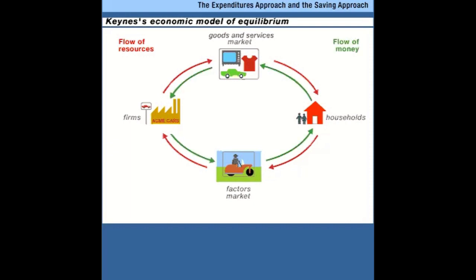If we start with this simplest possible model of the macroeconomy, it must be true that the top half of this flow has exactly the same magnitude, the same size, the same number as the bottom half of this flow. Where do businesses get the money that they pay consumers as income? They get it when consumers buy the goods and services. So in this simple model, the equilibrium — the stable outcome, the balance — is when consumption spending is exactly equal to real income.